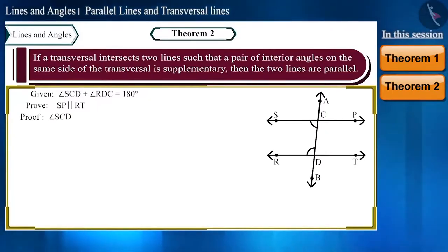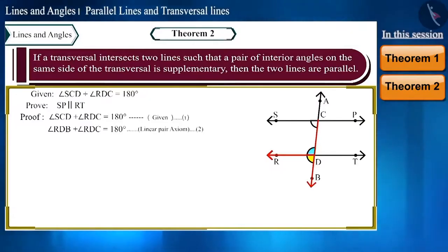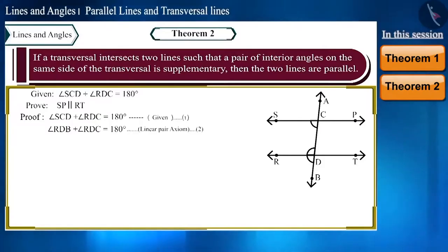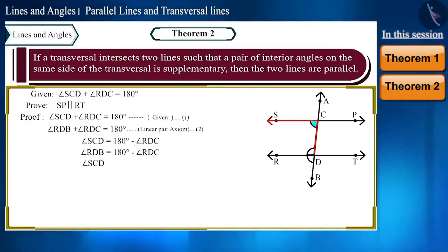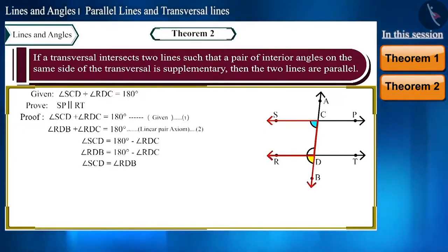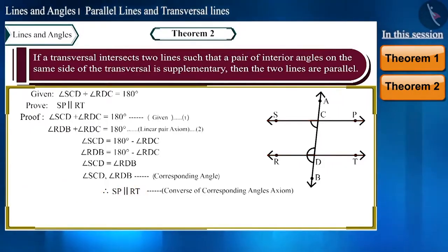Now let's look at its proof. Angle RDB and angle RDC form a linear pair, so by the linear pair axiom their sum is 180 degrees. From this we can say that angle SCD and angle RDB are equal. By looking at the figure, these two are corresponding angles. Therefore, using the converse of the corresponding angles axiom, we can say that these two lines are parallel.